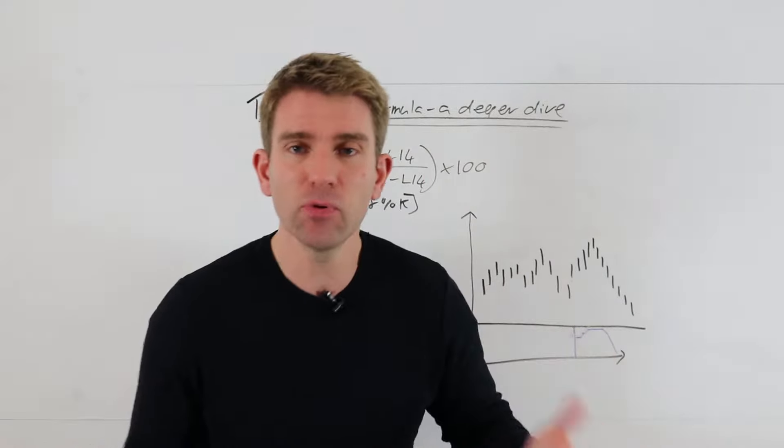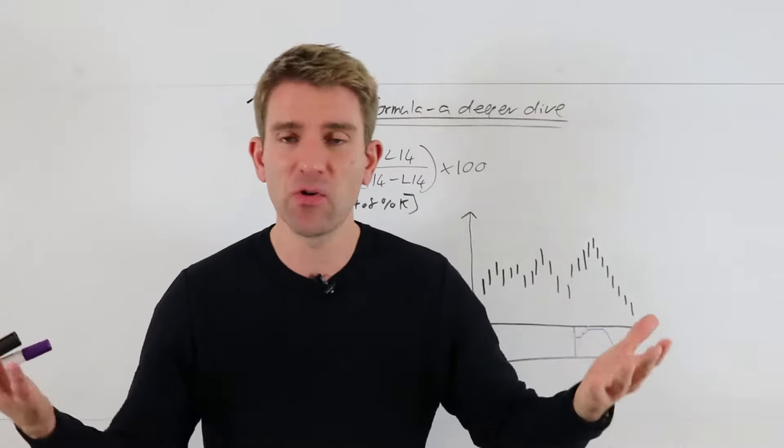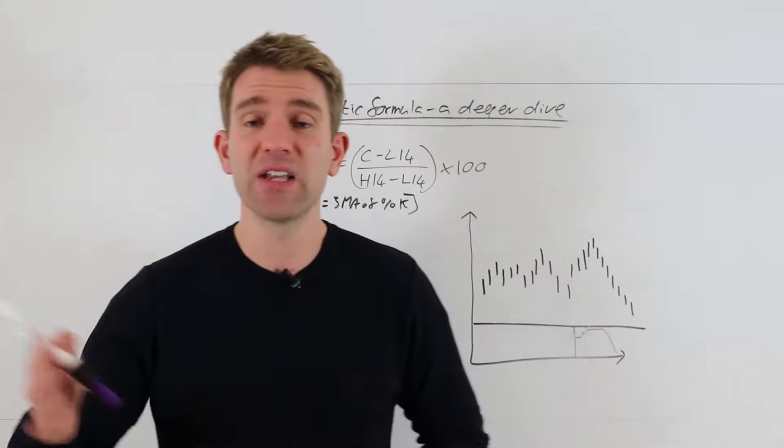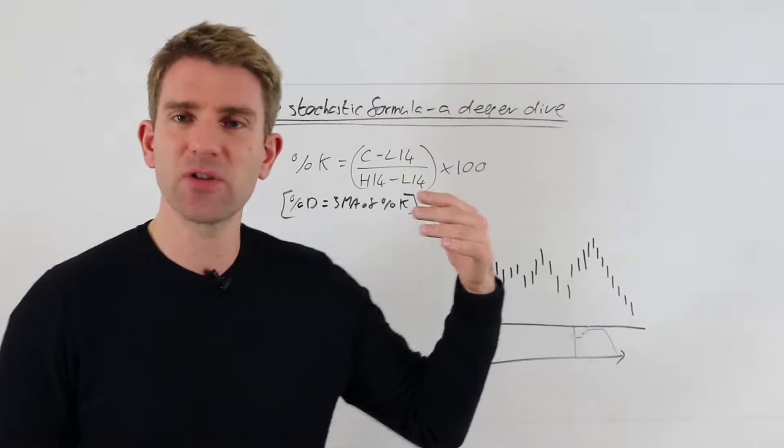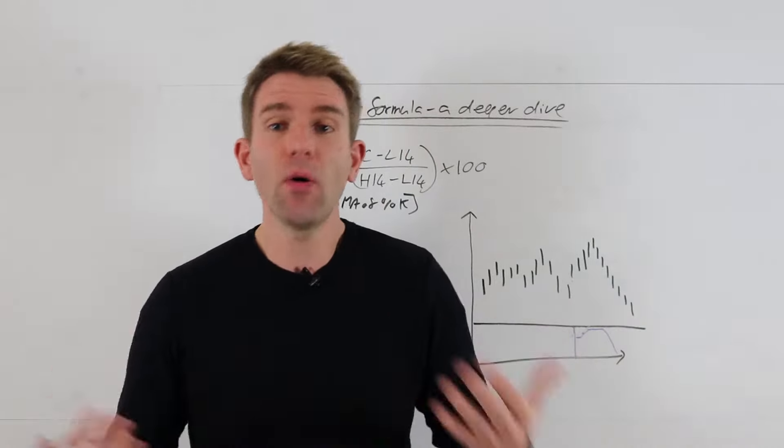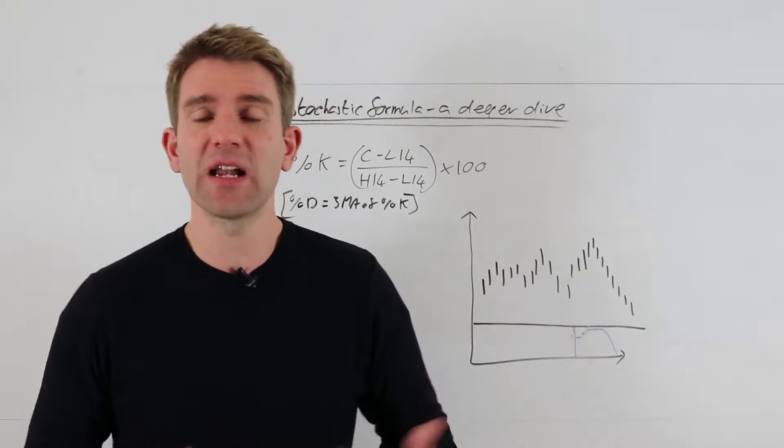Now moving average is very simple guys, we just take an average of 20 day whatever period we've got and that's just plotted there. When we get to things like stochastics it's not so obvious unless you dig around exactly what happens.